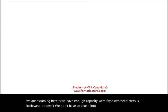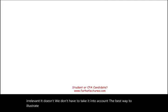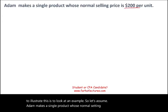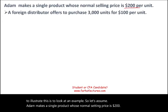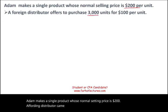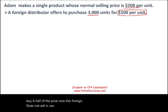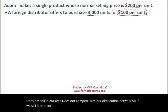The best way to illustrate this is to look at an example. Assume Adam makes a single product whose normal selling price is $200. A foreign distributor came asking to purchase 3,000 units at $100 — half the price. This foreign distributor does not sell in our area and does not compete with our distribution network, so selling to them won't affect our current business.